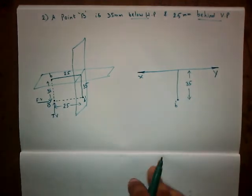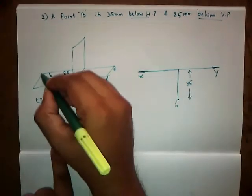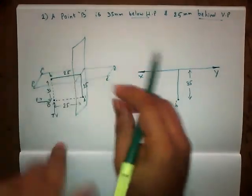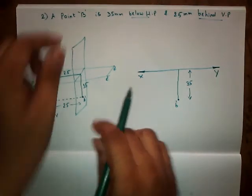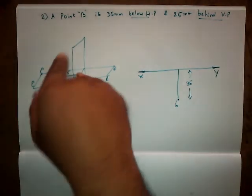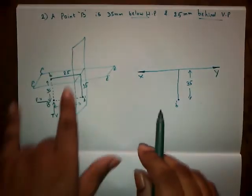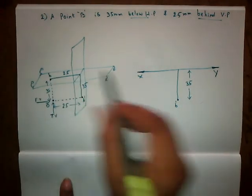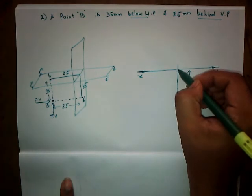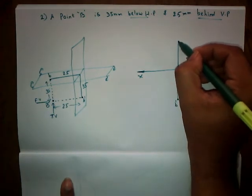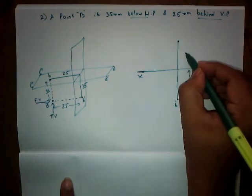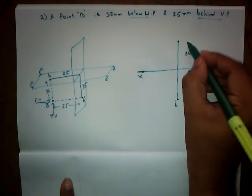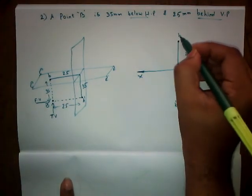Now we need to rotate the horizontal plane in clockwise direction. So if you rotate in the clockwise direction, this is going to rotate in this manner. This part is going upwards, that is a distance of 25 mm from XY reference line. So from XY reference line it is going upwards at a distance of 25 mm, and the name of the point is small b.